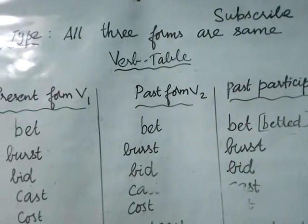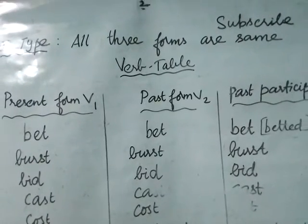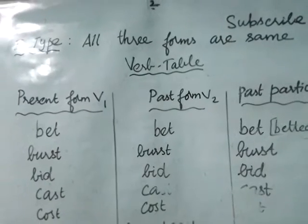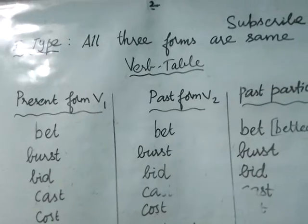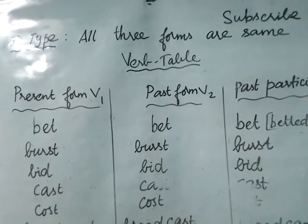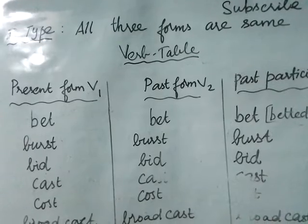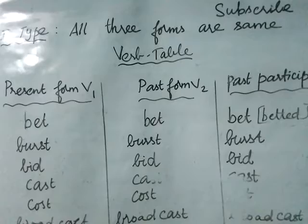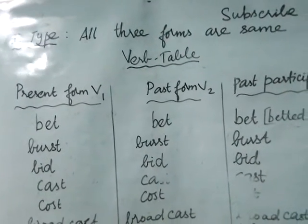Welcome back to our channel Easy Way to English. We have discussed 12 tenses. In order to learn tenses, it is essential to know the verb table. There are three types of verbs: the first type where all three forms are the same, the second type where the past form and past participle form are different, and the third type where all three forms are different.